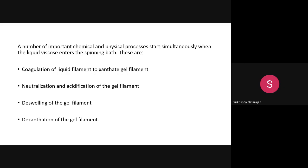The four key steps are: coagulation of the liquid filament to the xanthate gel filament; neutralization and acidification of the gel filament; de-swelling with the help of zinc; and de-xanthation. Finally, the viscose rayon produced will contain neither xanthate groups nor any acid or other groups — only the regenerated cellulose of viscose rayon.